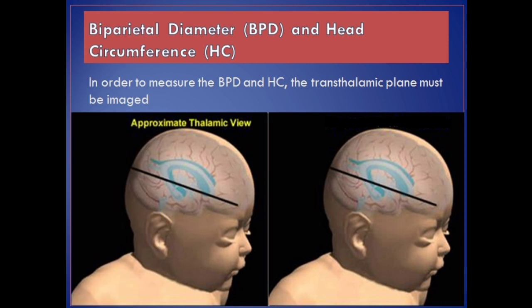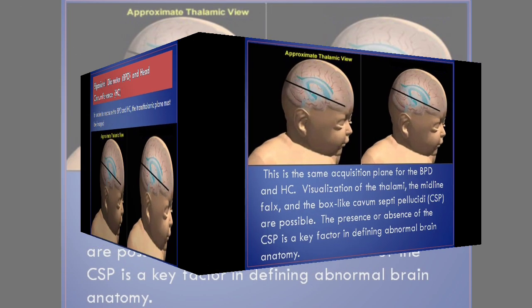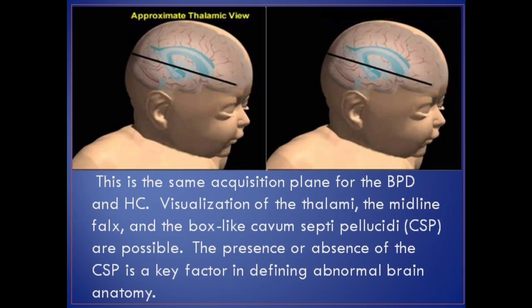Biparietal diameter and head circumference. In order to measure the BPD and HC, the transthalamic plane must be imaged. This is the same acquisition plane for the BPD and HC. Visualization of the thalami, the midline falx, and the box-like cavum septi pellucidi, CSP, are possible. The presence or absence of the CSP is a key factor in defining abnormal brain anatomy.